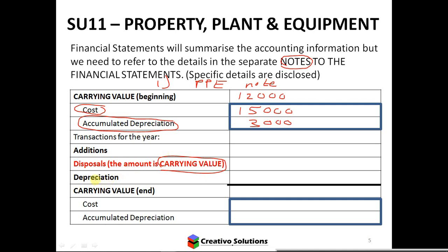Depreciation is the use of the assets over time. So if I'm looking at additions — let's say I've bought 5,000 more — and I've disposed of an asset at carrying value of 1,000, disposal is always negative. Depreciation for the year, let's say, is 2,000.